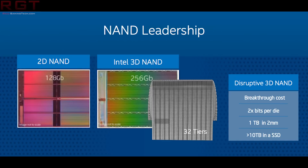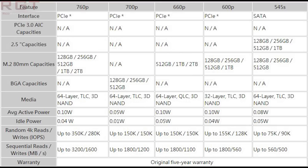Starting with the actual SSDs, we're looking at capacities for the 660p of 512 gigabytes, one terabyte, and two terabytes. For the 760p: 128 gigabytes, 256 gigabytes, 512 gigabytes, one terabyte, or two terabytes.